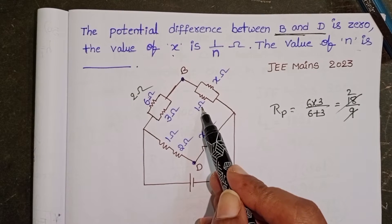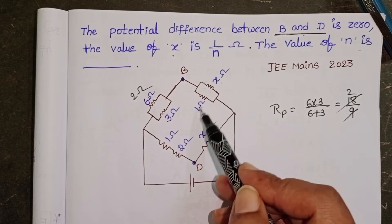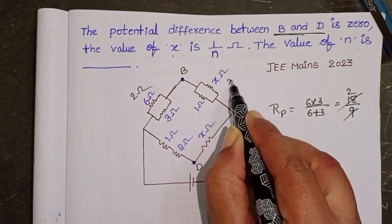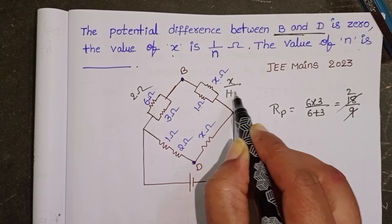And here 1 ohm and X ohm. These two are also in parallel. 1 into X equals X by 1 plus X.